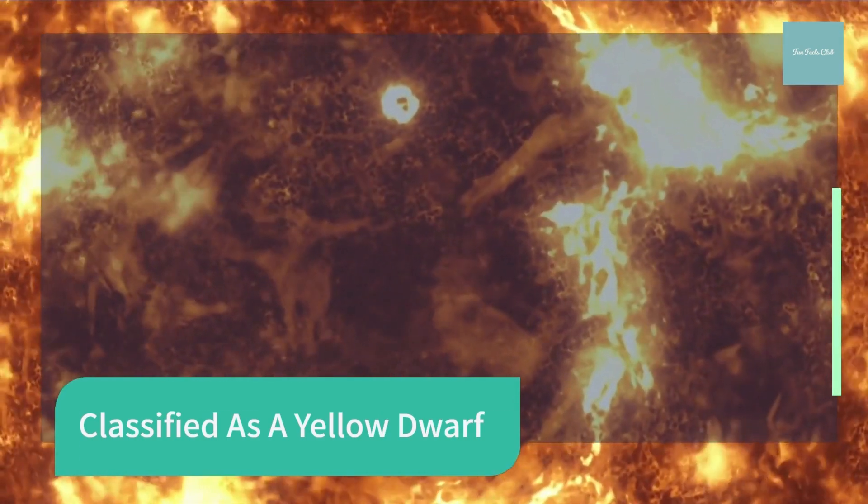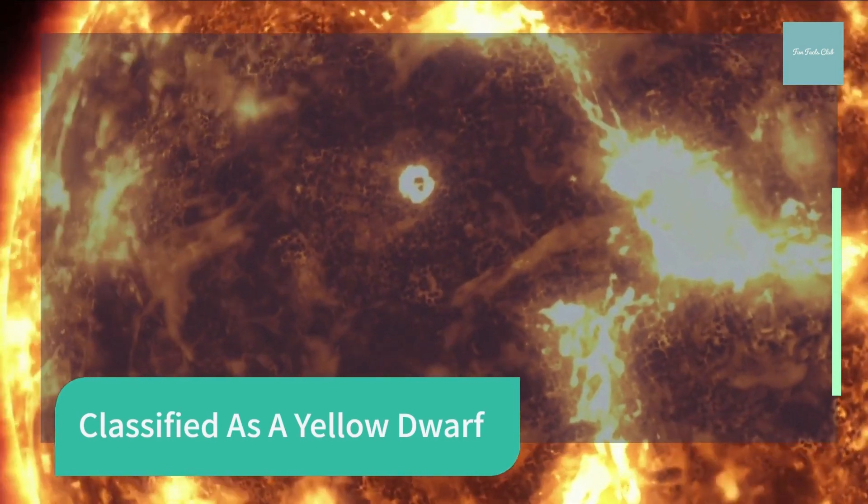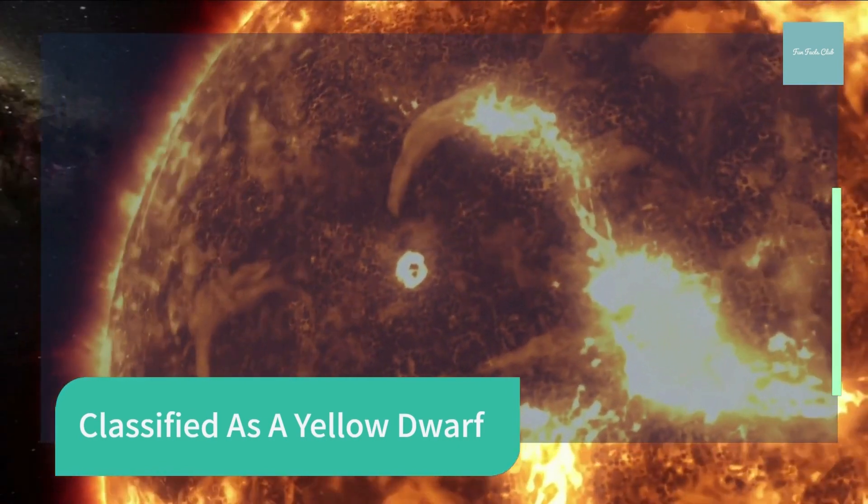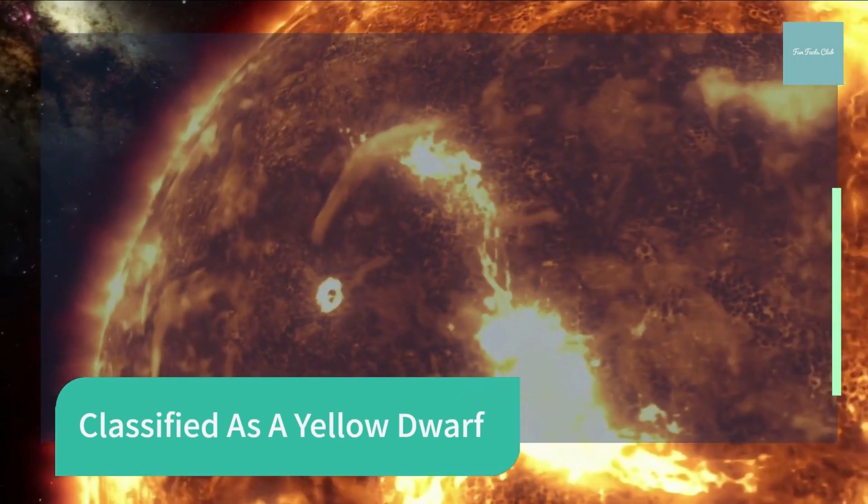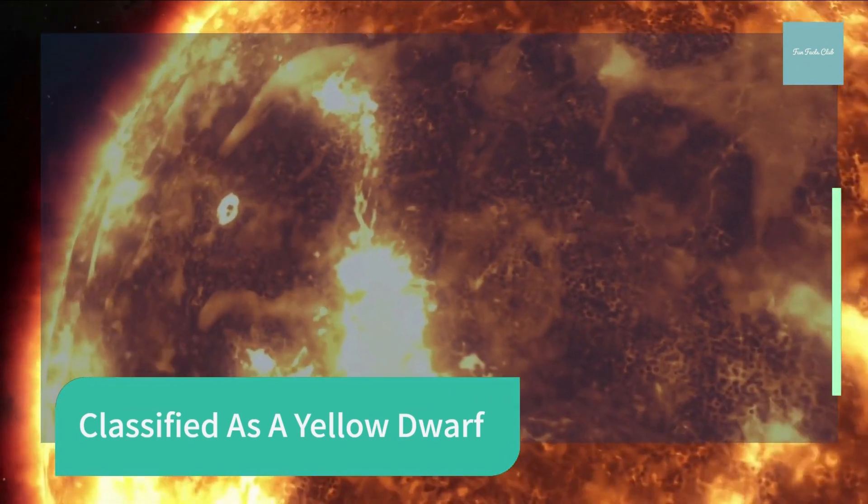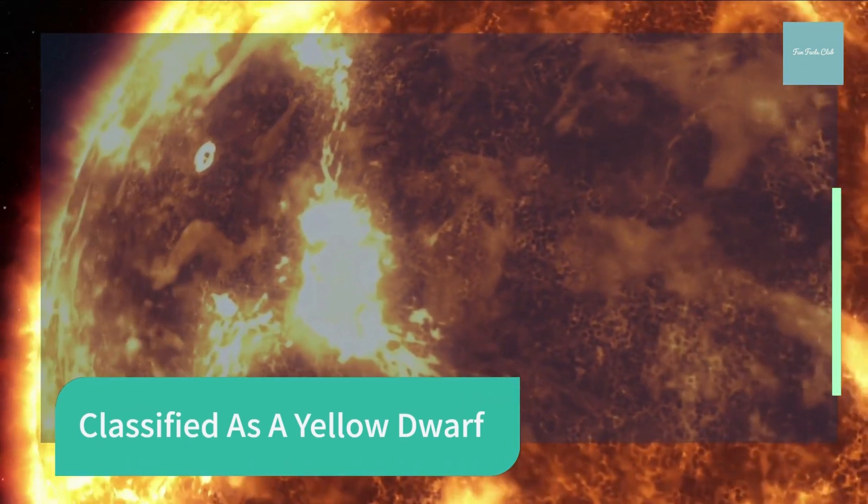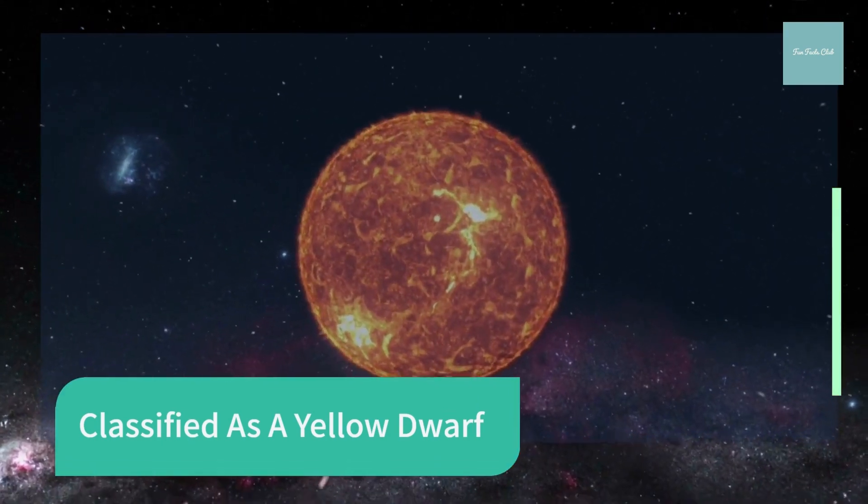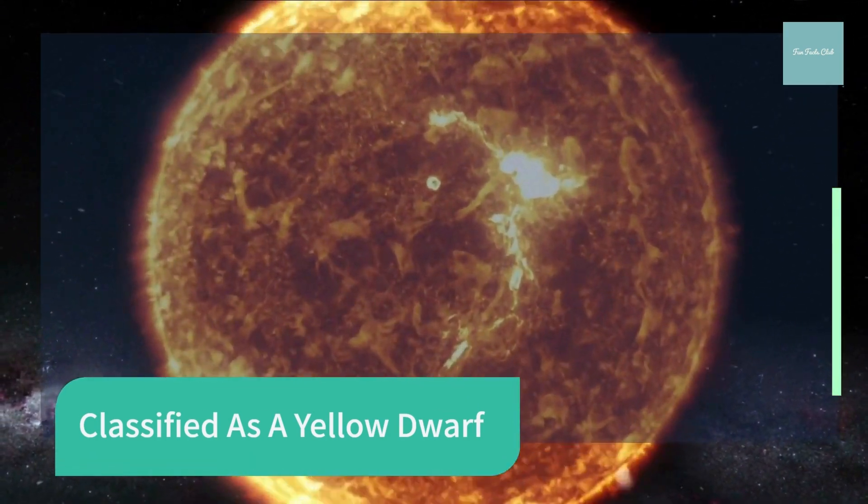On Earth, we see the Sun as either yellow, orange, or red as these are the colors of the longer wavelength lights which make it through our atmosphere. This process is why the sky appears blue, as shorter wavelength lights, such as blue and violet, are absorbed by the atmosphere, thus giving it its bluish hue.